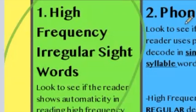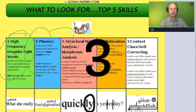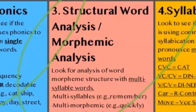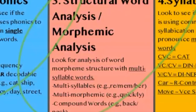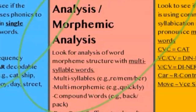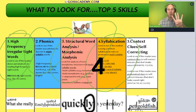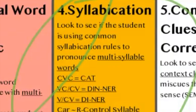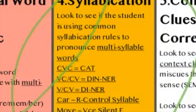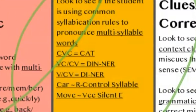Number one: high frequency sight words. Number two: the use of, or lack of, phonics or letter-sound correspondence. Number three: structural word analysis or morphemic analysis — that's used to break up multi-syllable words, words with morphemes like prefixes, suffixes, and base words.